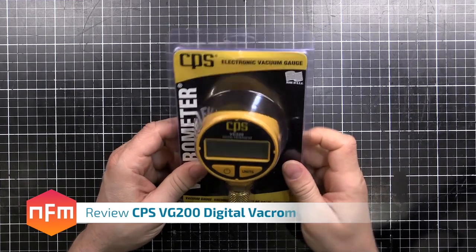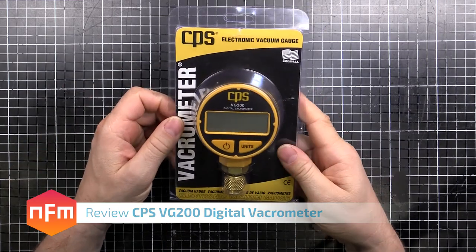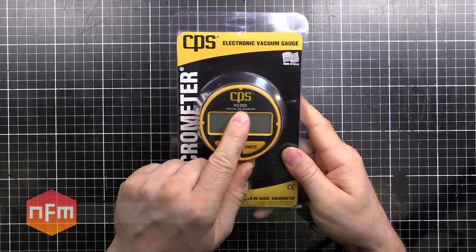Hey guys, new toy day. I got this digital vacometer, or a micron gauge as they are otherwise known. This is a CPS brand, VG200.